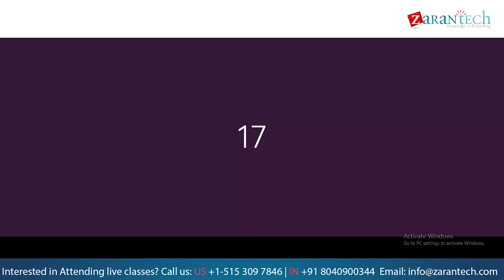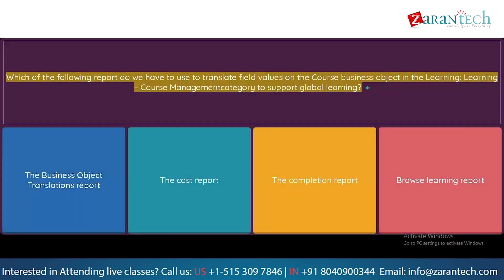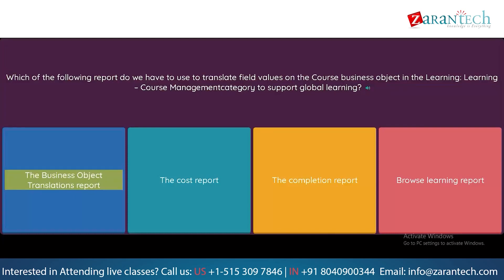Question: Which of the following reports do we have to use to translate field values on the course business object in the Learning Course Management category to support global learning? Option 1: The Business Object Translations report. Option 2: The Cost report. Option 3: The Completion report. Option 4: Browse Learning report.